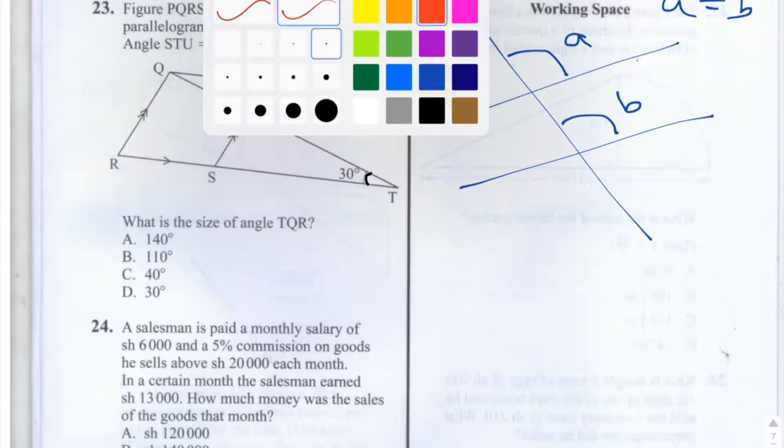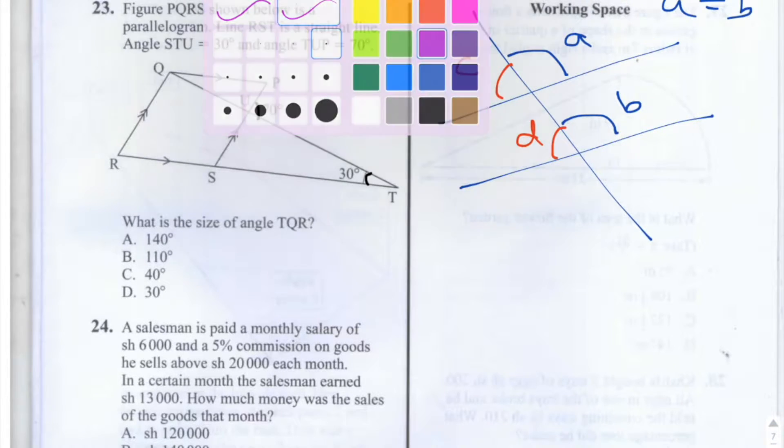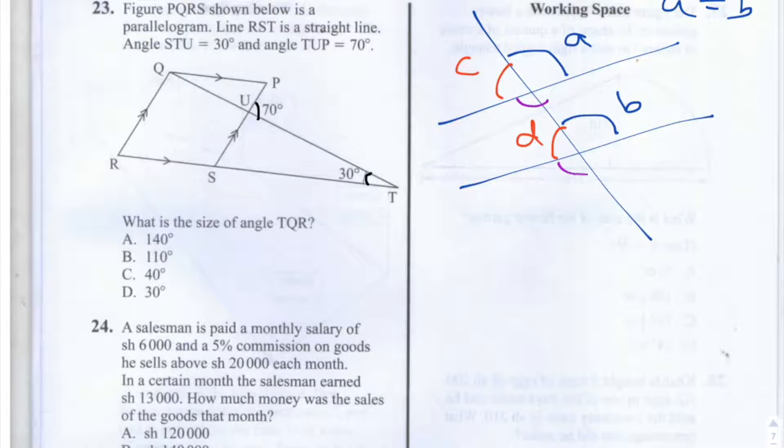And similarly, this angle here and this angle here, C and D, are also equal. And even this angle here and this angle here are equal. And also this angle here and this angle here are equal as well. We're required to use that rule to solve this question.